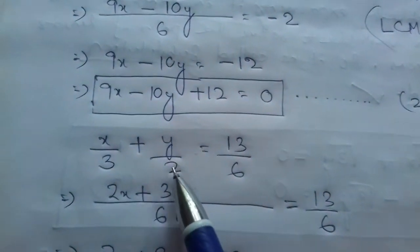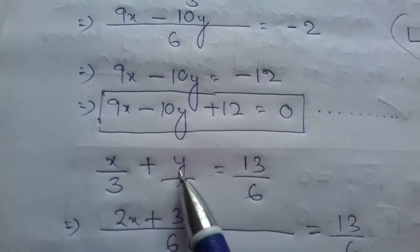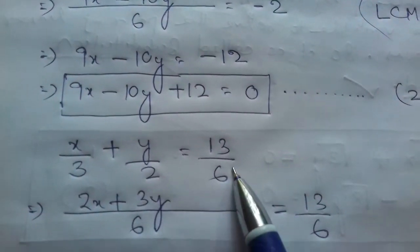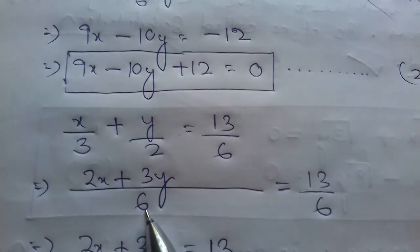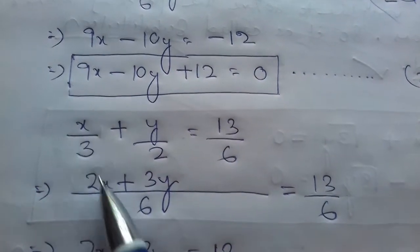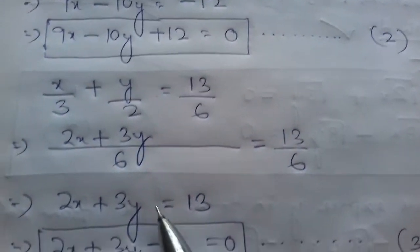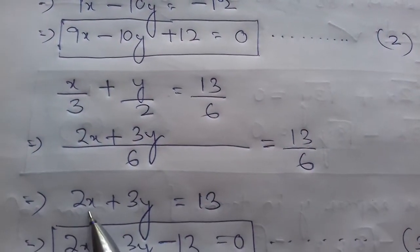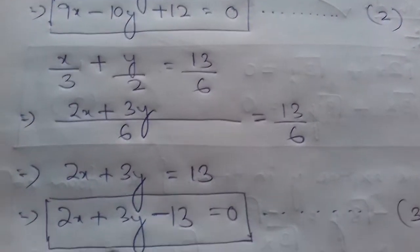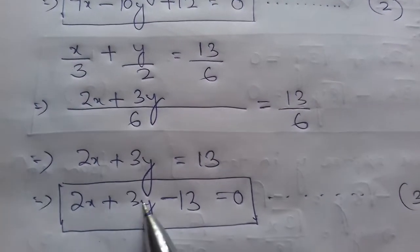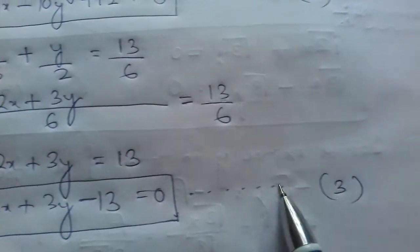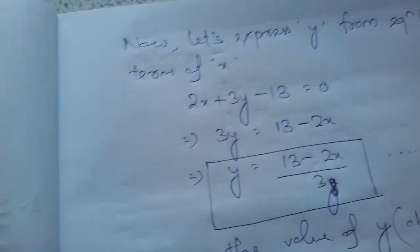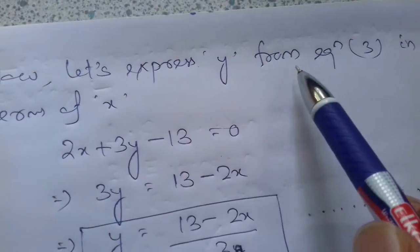The second question is x/3 + y/2 = 13/6. Taking LCM as 6, this becomes 2x + 3y = 13, or 2x + 3y − 13 = 0. This is equation 3.